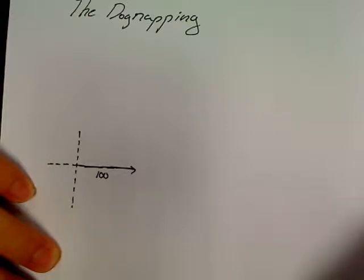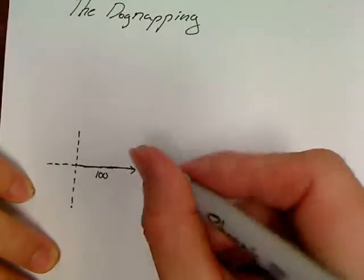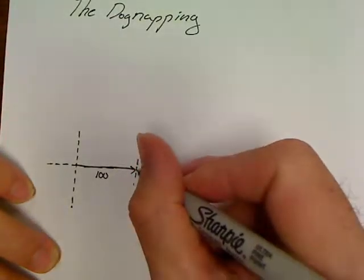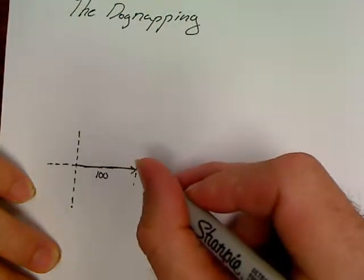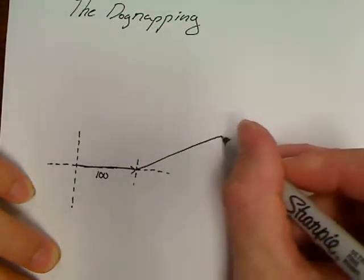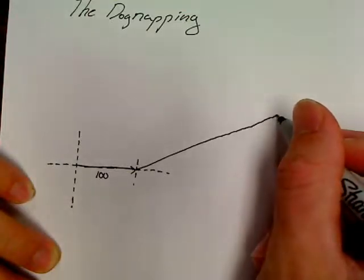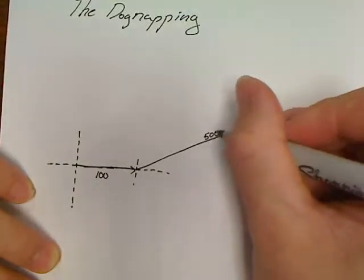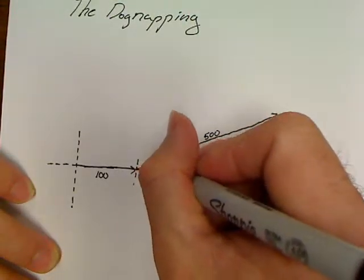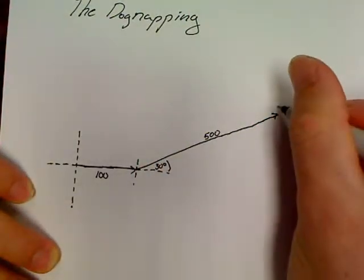Alright, let's see what he does then. He then goes 500 kilometers in a direction of 30 degrees north of east. So if I'm keeping my scale, this is going to be one heck of a long line. So then he turns and goes 500 kilometers at 30 degrees north of east.